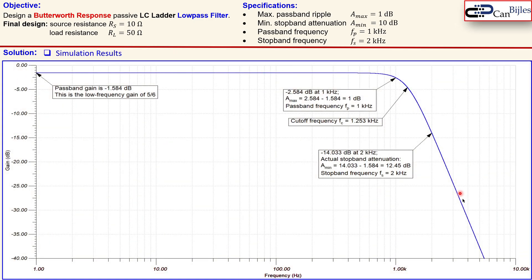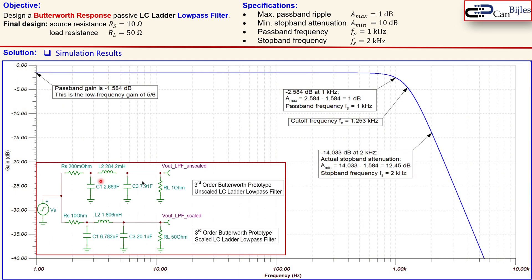This is the Bode plot looking only at the gain. You see here also the circuit again. This part is the passband gain which is minus 1.584 dB, which is also the low frequency gain of five over six.